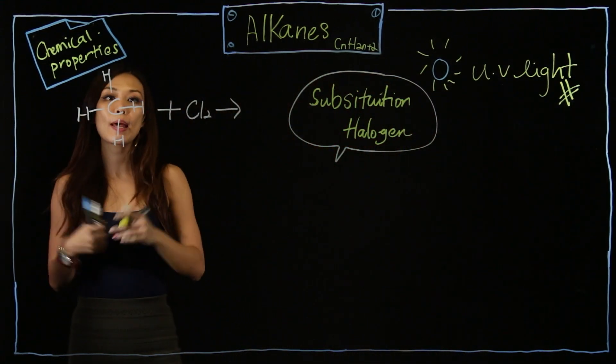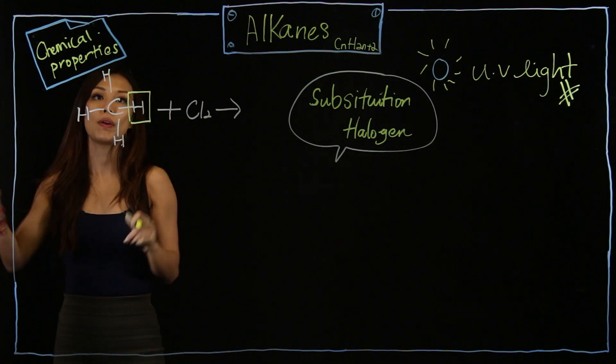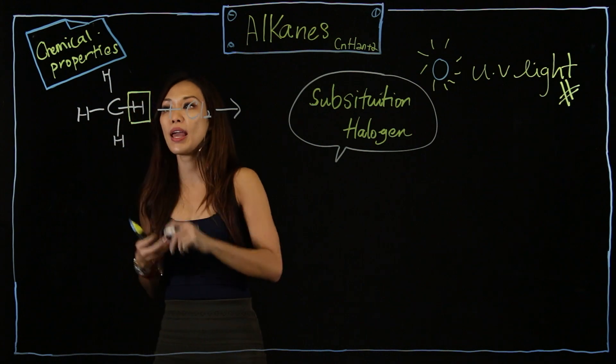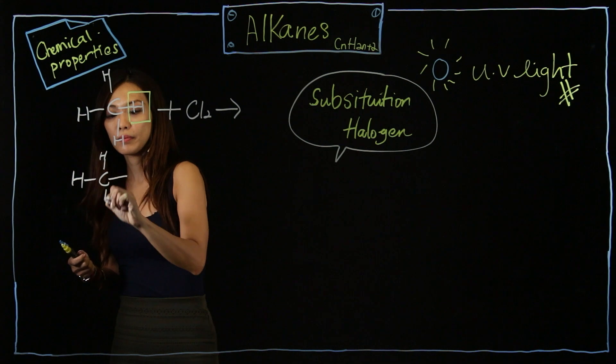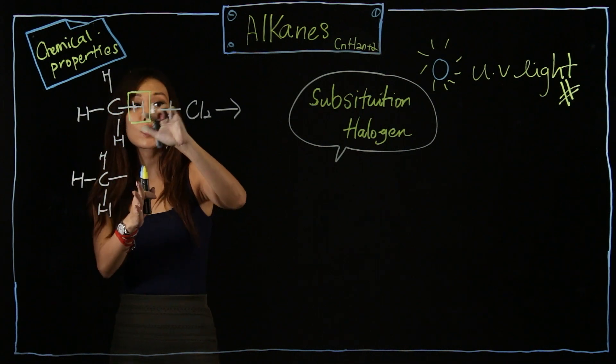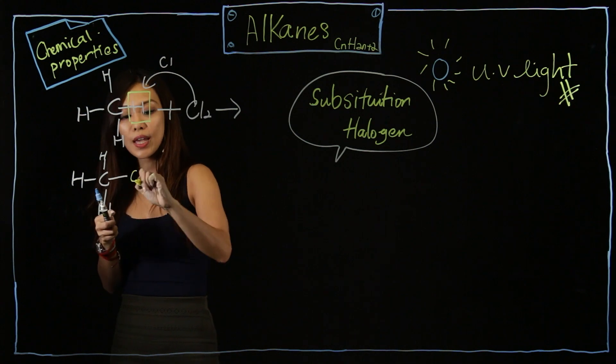So over here, now for substitution, just like math, only one H has been replaced. So I will kick one H out. Because one H is kicked out, one of the Cl will go in. So I will have Cl here.